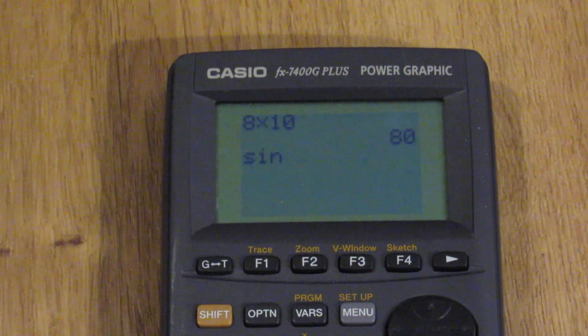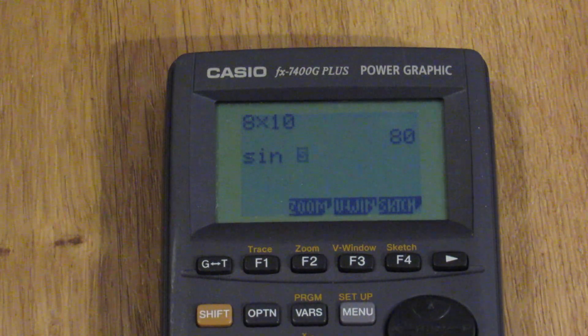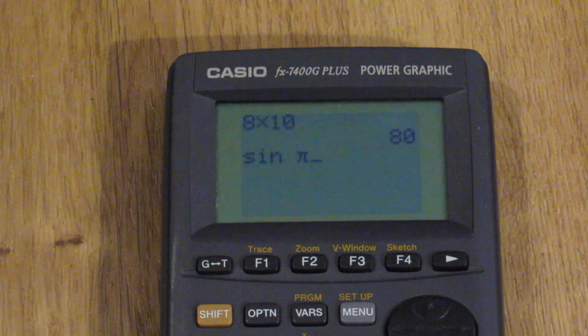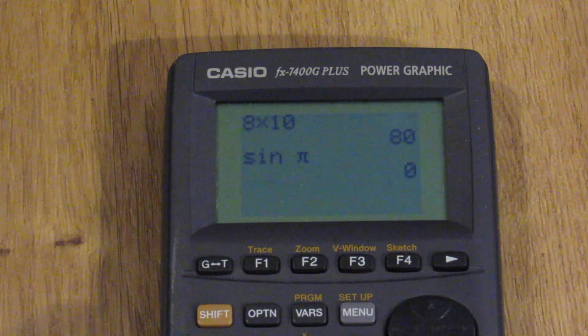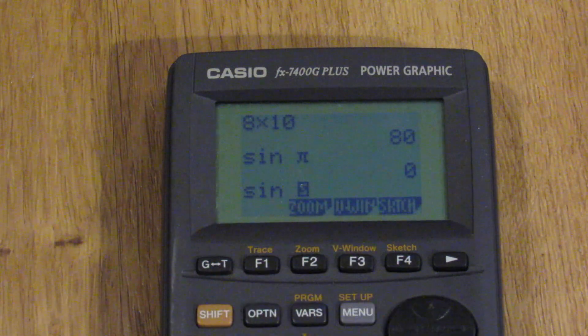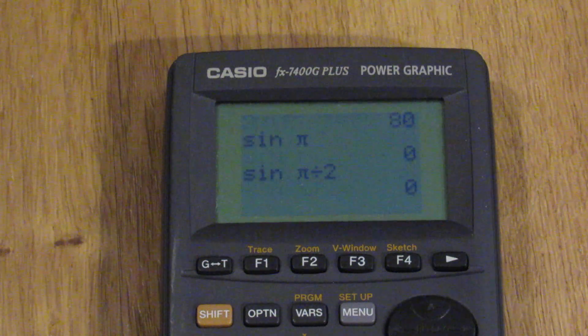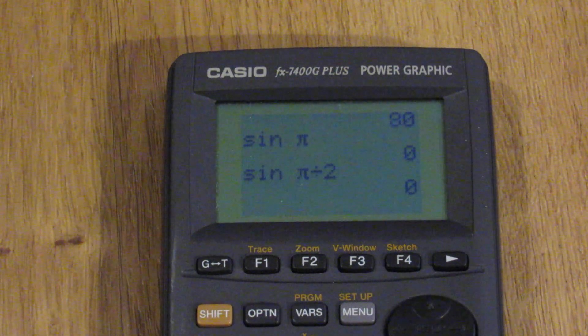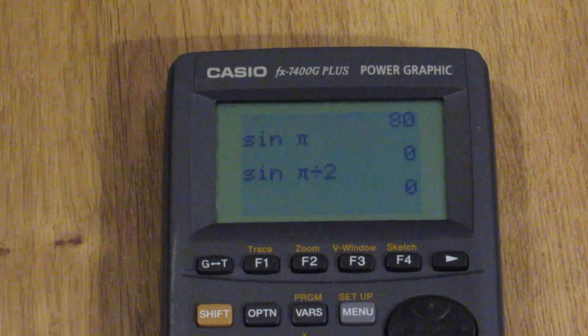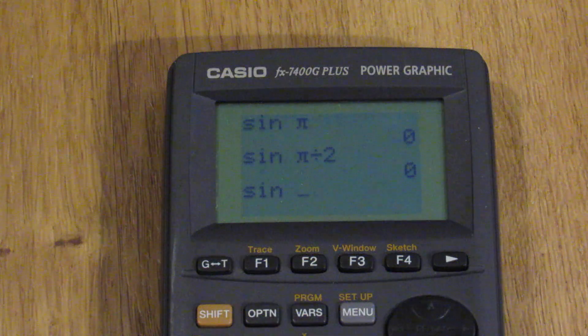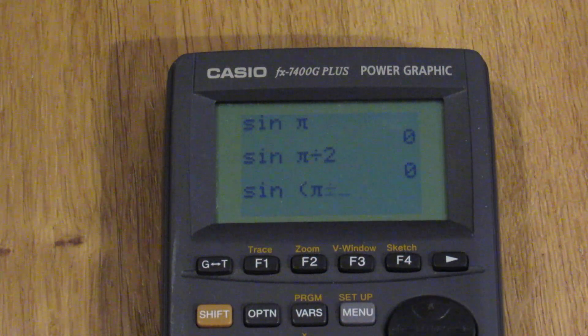It uses radians. If I do shift and then pi, I can, that should be zero. And then if I do sine of pi divided by two, that should also be, oh, oops. Yeah, it should have been one.